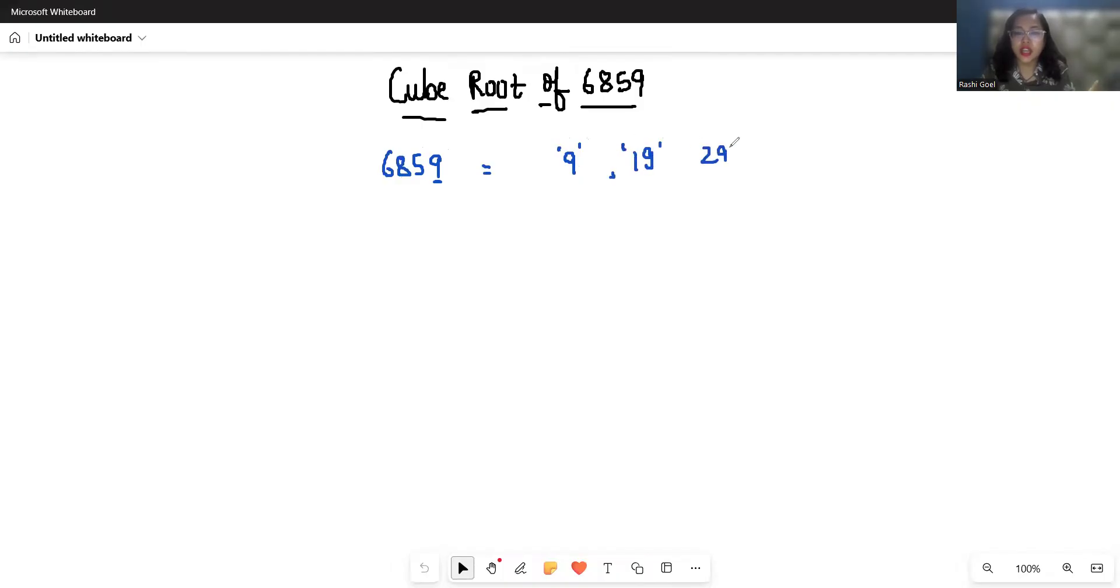9 cubed is 9 times 9 times 9. 9 times 9 is 81, and 81 times 9 is 729, which is not even close to 6859. Now let's check with 19.